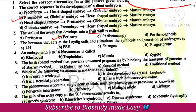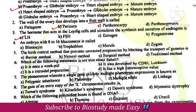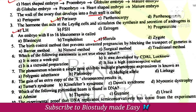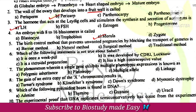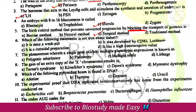The hormone that acts on Leydig cells is LH. Embryo with 8 to 16 cells is called morula. The birth control method that prevents unwanted pregnancy by blocking transport of gametes is the surgical method. Which of the following statements is not true about Saheli? It is a one-week pill.